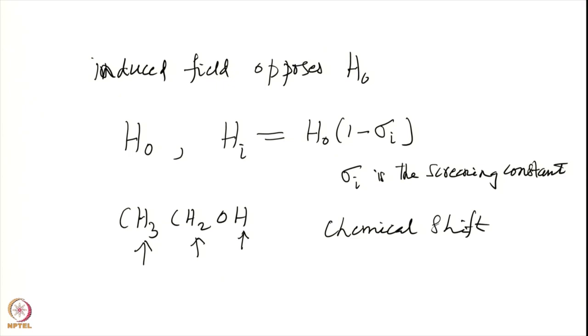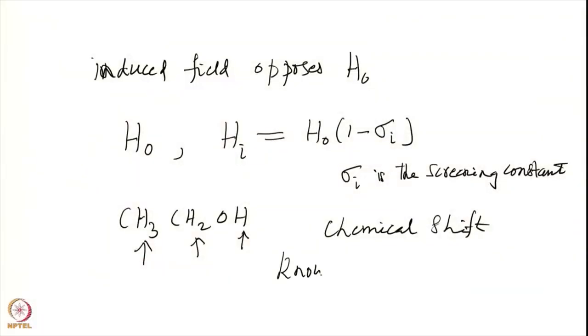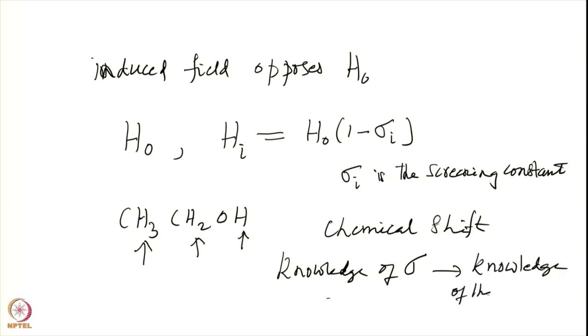You will see that this actually depends upon not only the screening constant but also H₀ itself. However, what the chemist or biologist is interested in is not the H₀ dependence but the chemical environment dependence — you want to characterize the sigmas. The sigmas are very characteristic of the electronic environment, therefore knowledge about sigma gives you knowledge about the structure.